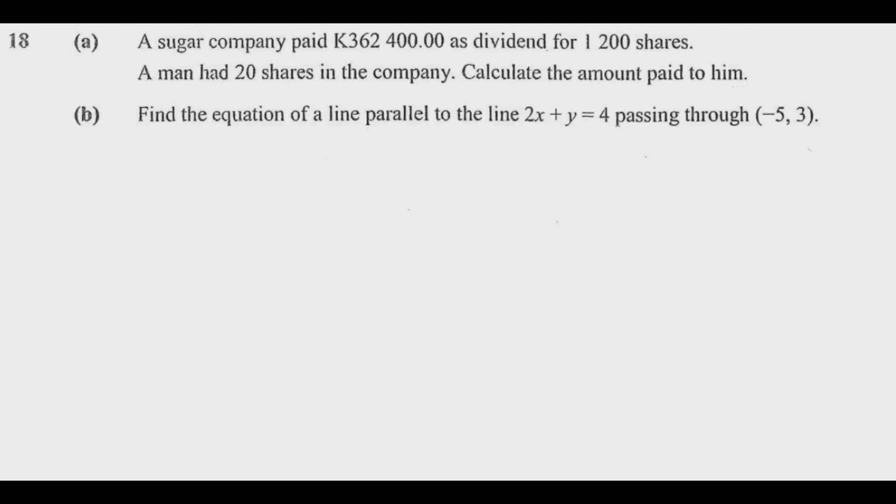Question 18(a) reads: A sugar company paid K362,400.00 as dividend for 1,200 shares. A man had 20 shares in the company. Calculate the amount paid to him. It's important to know what the question is asking us to find - the amount paid to the man for the 20 shares.